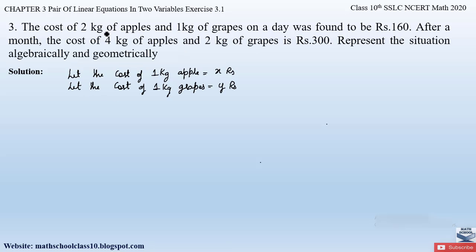Since they have given us 2 kg of apples and 1 kg of grapes together was found to be Rs. 160, we will take 2 kg into cost per kg. Here cost per kg of apple is x, so we take 2 into x, plus 1 kg of grapes into cost of 1 kg of grapes which is y, so 1 into y equals 160. Let us take this as equation number 1.